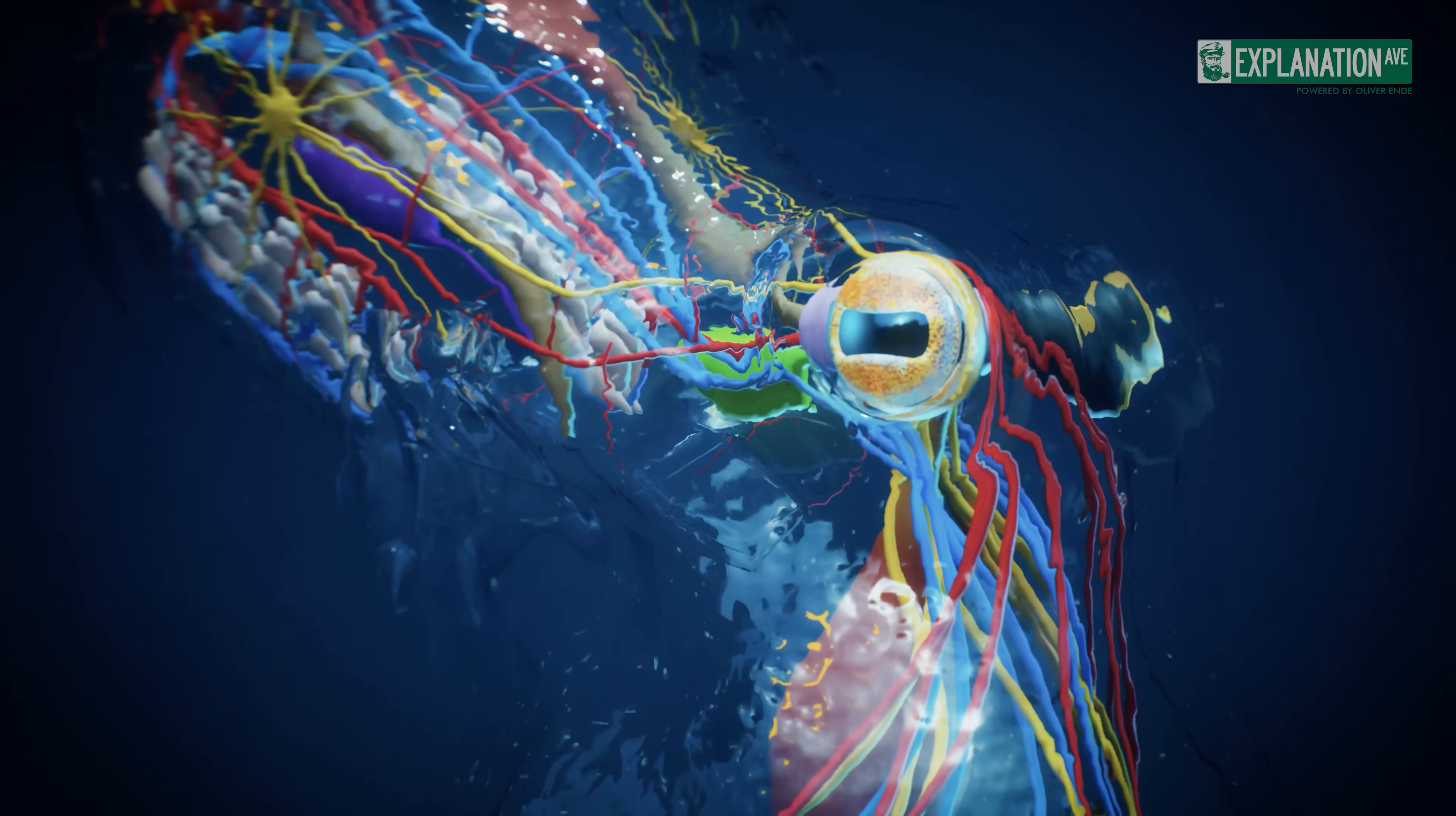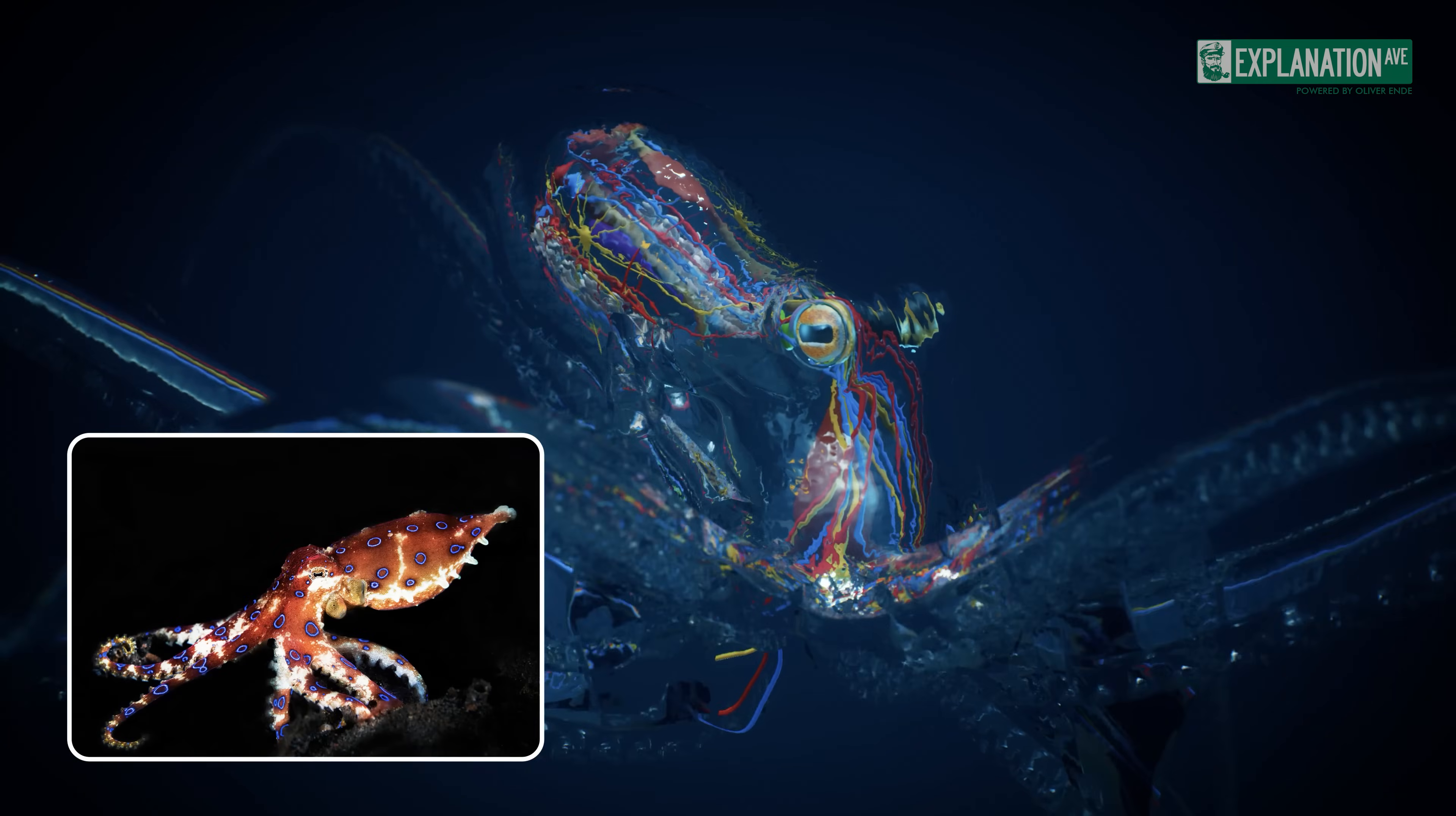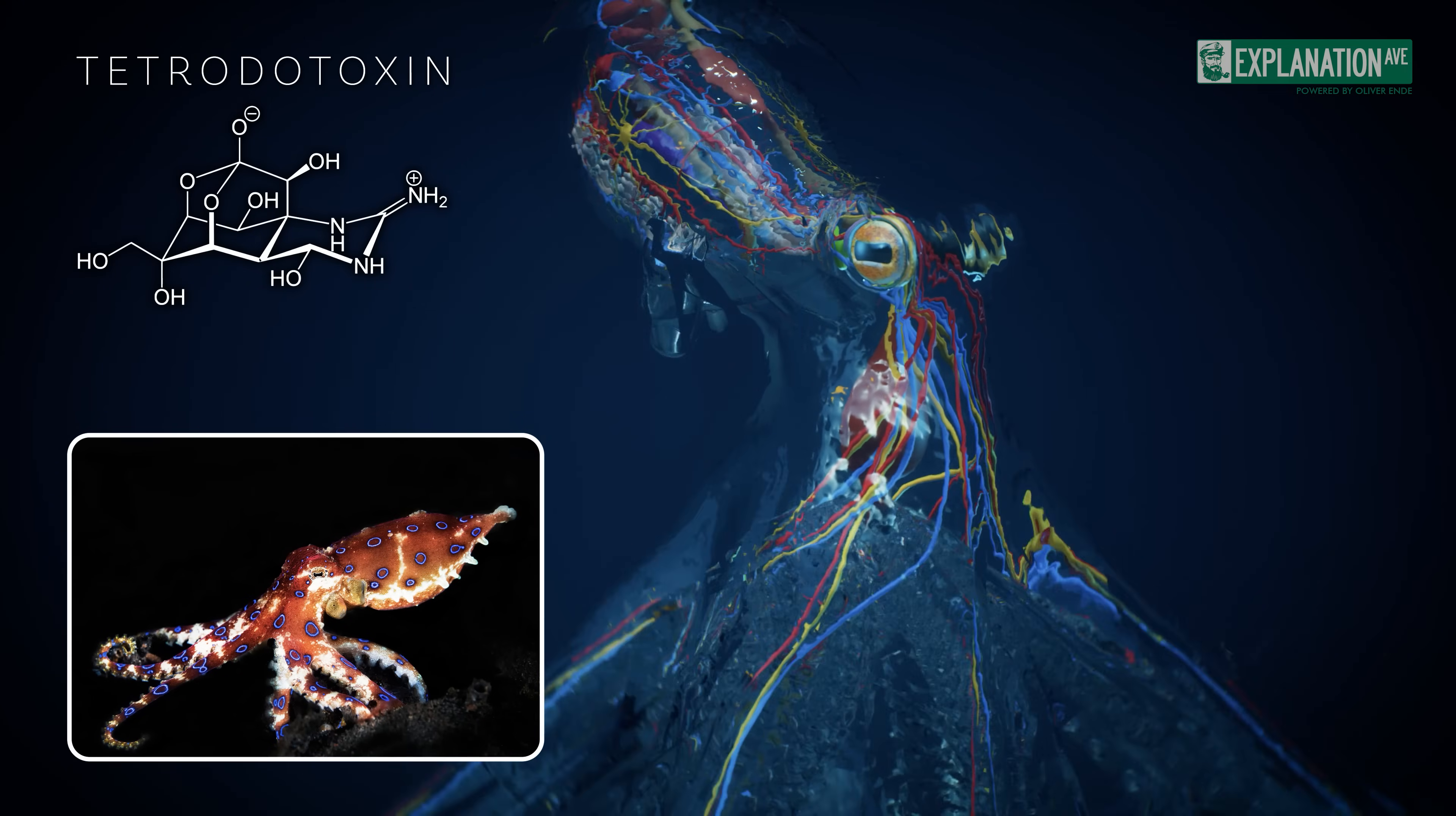Octopuses have a special gland for producing and storing venom, which they use to paralyze their prey. Without this venom, it would be challenging to immobilize their prey. Although all octopuses are venomous, only the blue-ringed species pose a serious threat to humans. Their venom contains the potent neurotoxin tetrodotoxin, making them one of the most venomous sea creatures.